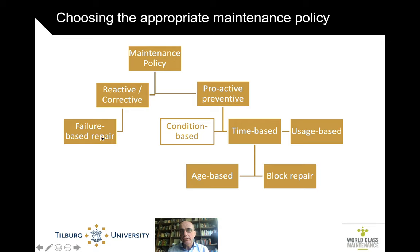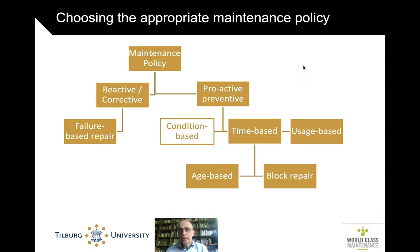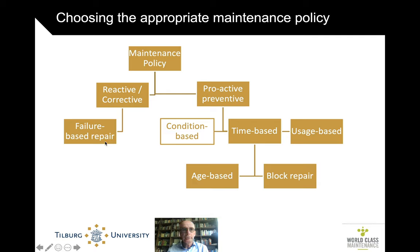When you're reactive, that means you fix failures after they occurred. When you're proactive, there are different ways: you can do it at a fixed interval — every year, every month, or whatever interval — or based on usage, such as how many kilometers the car has driven or how many flight hours the plane has had, or condition-based, which is our holy grail. You only do it when it's needed. Failure-based repair is obviously in general too late; time-based often turns out to be too early; and condition-based is just in time.